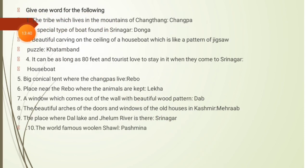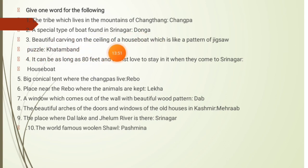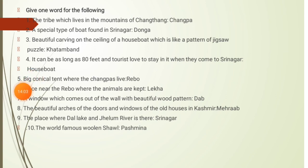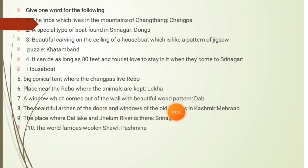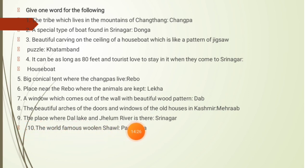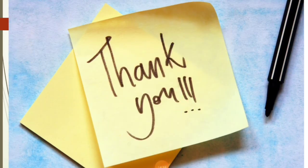Give one word for the following: the tribe living in the mountains of Changthang — Changpas; a special type of houseboat in Srinagar — Donga; beautiful carving on the ceiling of a houseboat like a jigsaw puzzle pattern — Khatamband; it can be as long as 80 feet and tourists love to stay in it when they come to Srinagar — houseboat; big conical tent where the Changpas live — Rebo; place near the Rebo where animals are kept — Lekha; a window which comes out of the wall with beautiful wood pattern — Dab; the beautiful arches of doors and windows of old houses in Kashmir — Meherab; the place where Dal Lake and Jhelum River are — Srinagar; the world-famous woolen shawl — Pashmina. You have learned a lot from this chapter. Thank you.